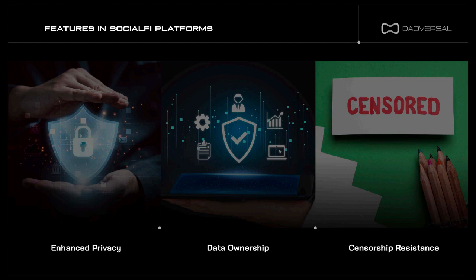For data ownership: with blockchain, users can have ownership and control over their data. They can decide how their personal information is used, shared, and monetized, giving them greater autonomy in controlling the social media landscape. And lastly, censorship resistance: blockchain-based social platforms aim to resist censorship and content manipulation. Due to the decentralized nature of blockchain, content posted on these platforms is less susceptible to being altered, removed, or censored by central authorities, providing a more open and transparent social media environment.